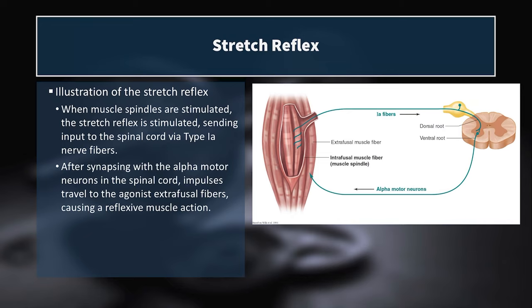Here's how it works: when muscle spindles are stimulated, this activates the stretch reflex, sending action potentials up the 1a fibers back to the dorsal root of the spinal cord, which synapses with the alpha motor neuron in the ventral root, sending action potentials back down to the motor units that activate the agonist fibers in that muscle. The pre-stretch during the absorption or eccentric phase causes the agonist muscles to contract even harder. So not only do you have a conscious contraction of those muscle fibers, but also a subconscious and therefore much faster contraction as well.